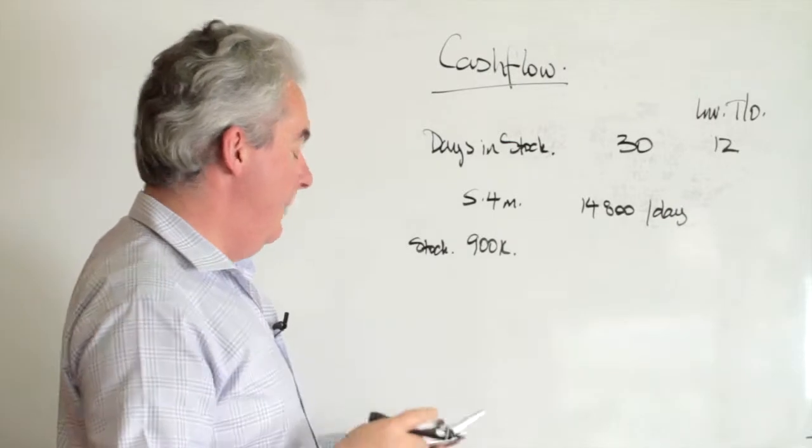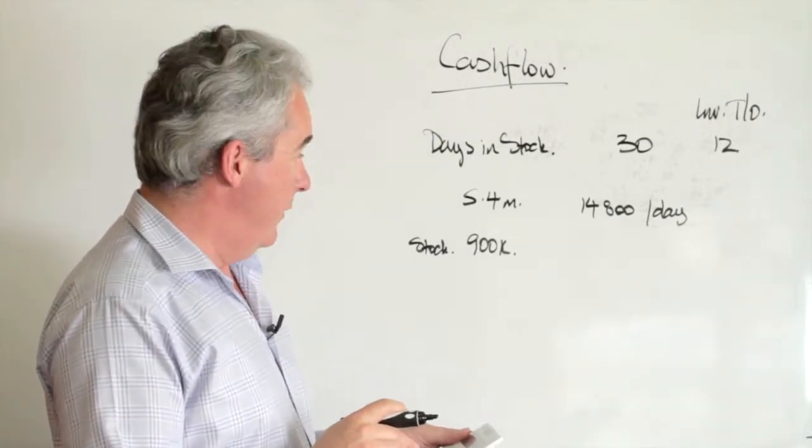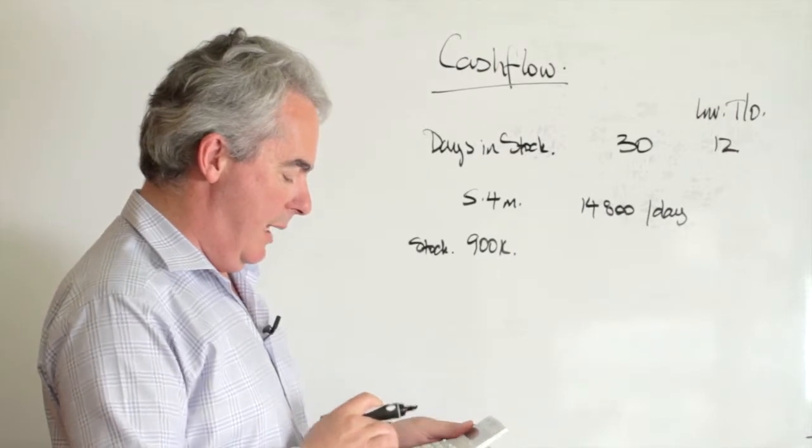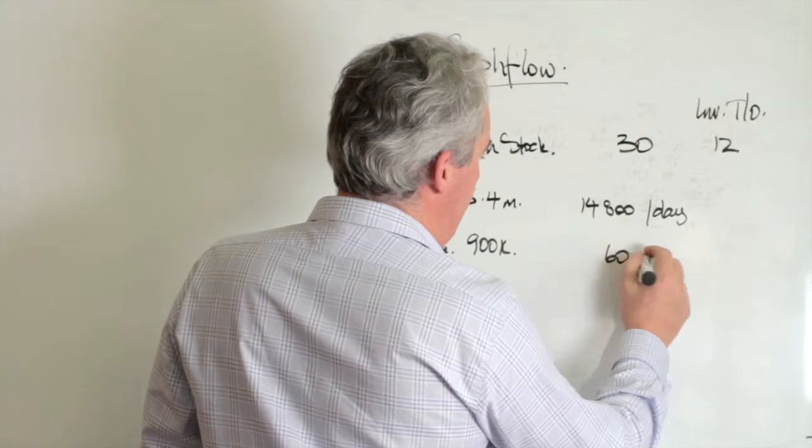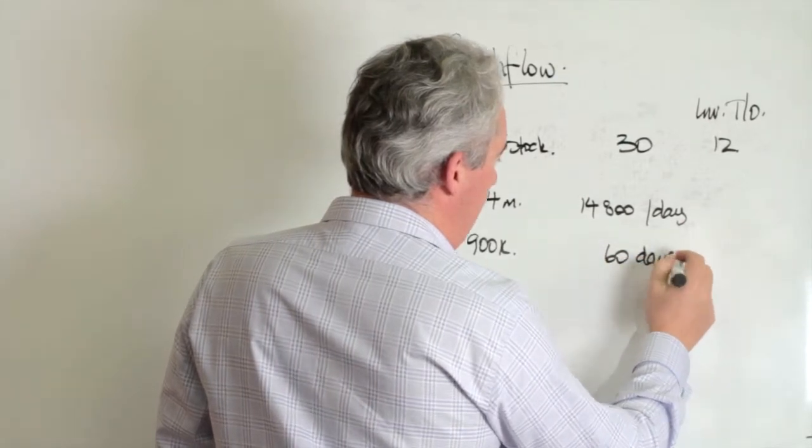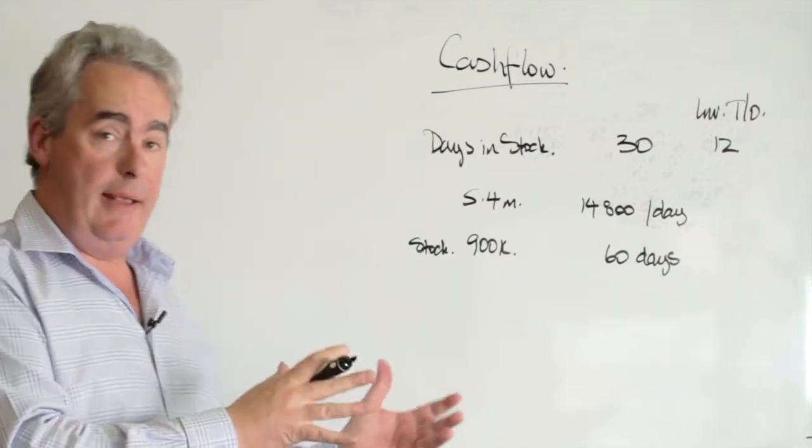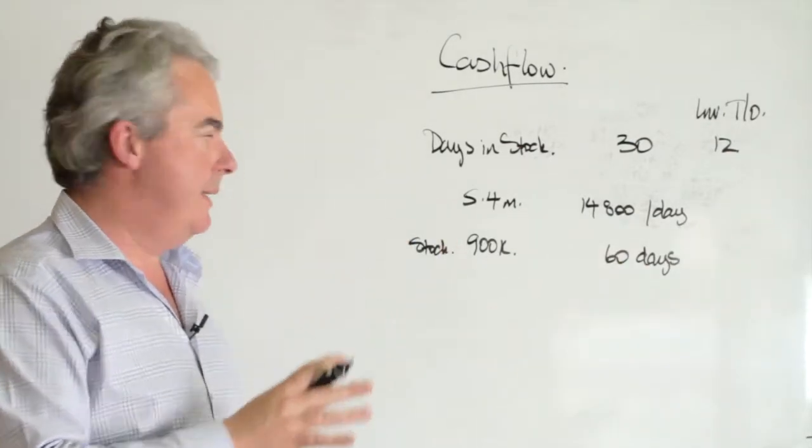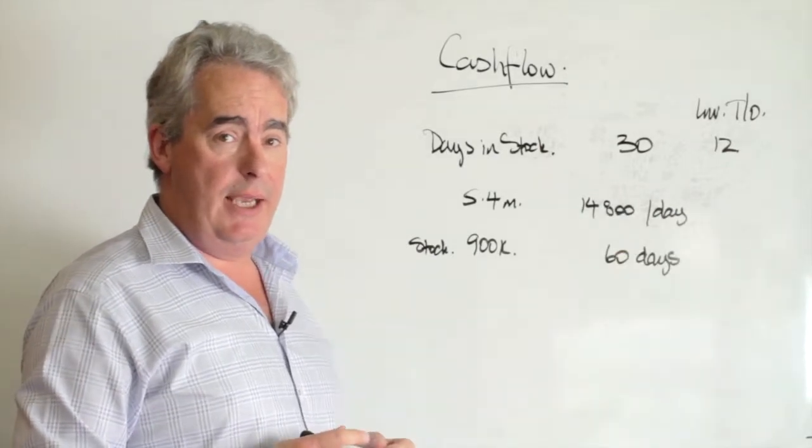That's their cost, they make a margin on that. But they had $900,000 worth of stock divided by $14,800 means that they've got 60 days worth of stock on hand. So if they didn't buy anything, assuming they had all the right stuff, they'd still be able to supply their customers for two months.